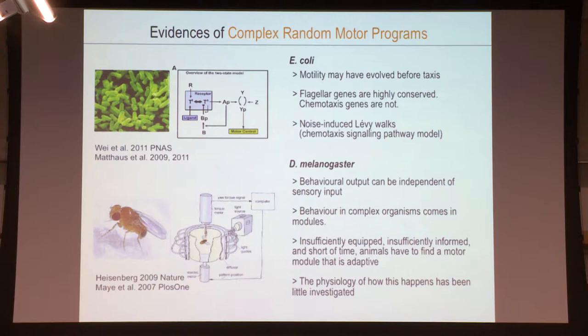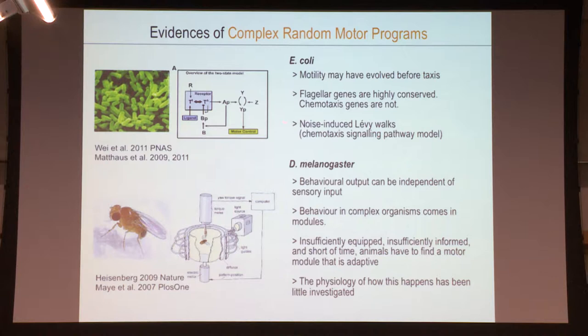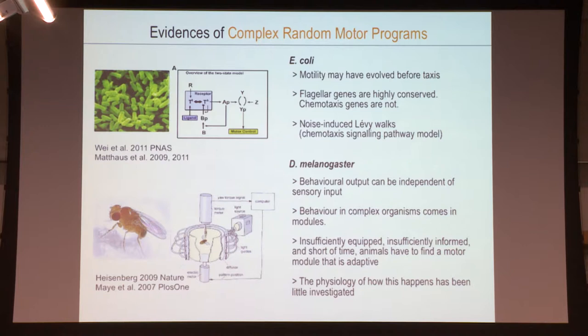Is there any evidence of this in animals? There are people studying these things from outside movement ecology whose work supports these ideas. People working on E. coli have analyzed genes and detected that motility may have evolved before taxis. The genes related to the motor systems of E. coli — the flagellar apparatus — are preserved ancient genes common to all bacteria, and these are very different from the genes related to the sensory ecology of bacteria.